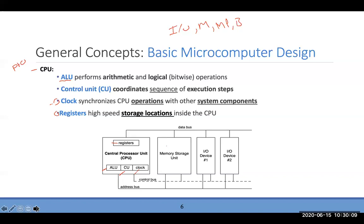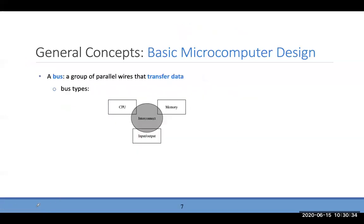The main memory, IO, data bus, address bus, and control bus are all key components. The microprocessor, memory, and IO are interconnected by three types of buses: the address bus, the data bus, and the control bus.